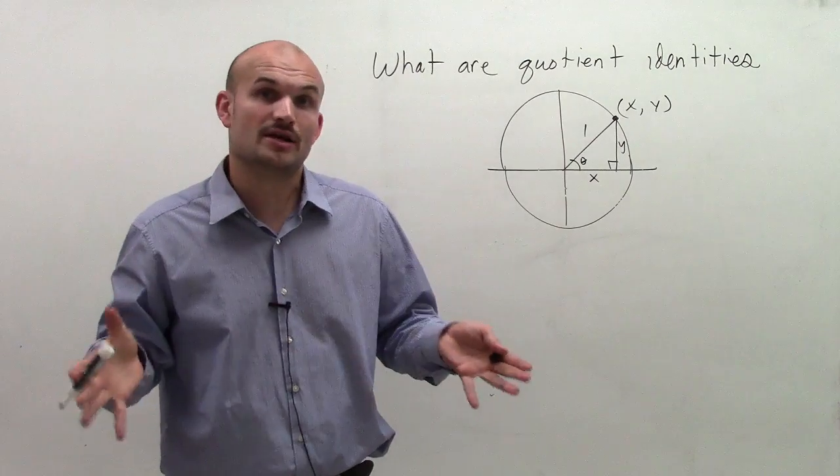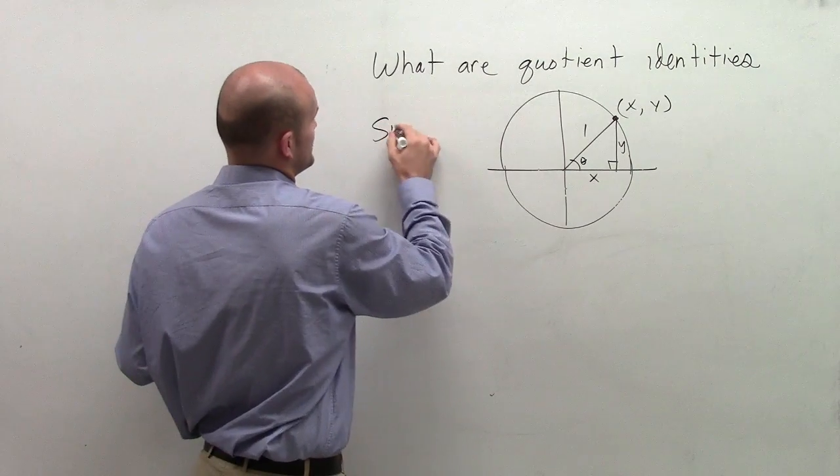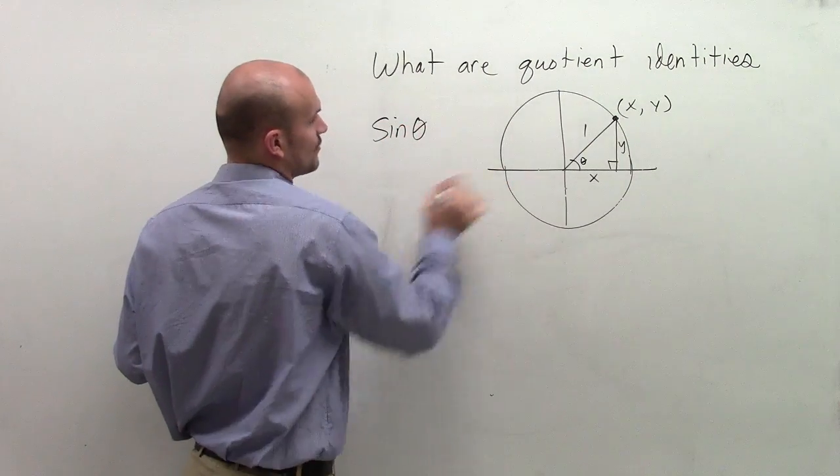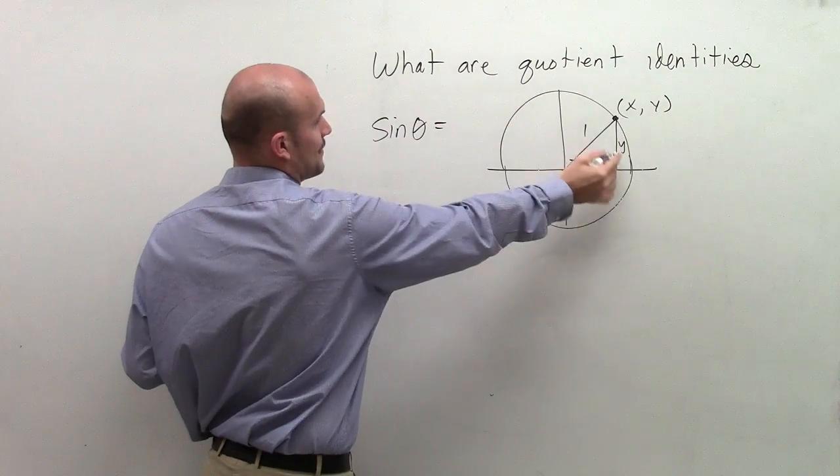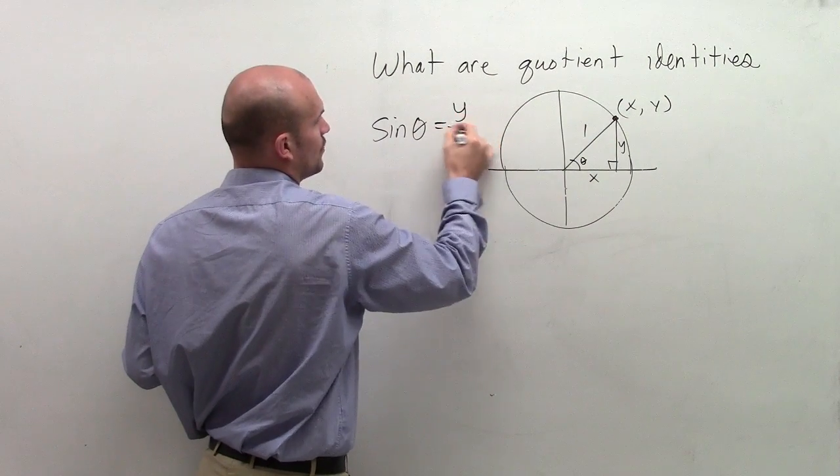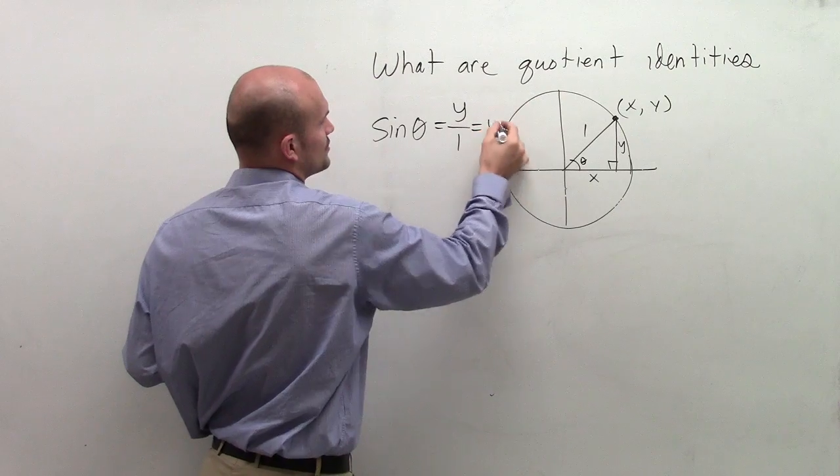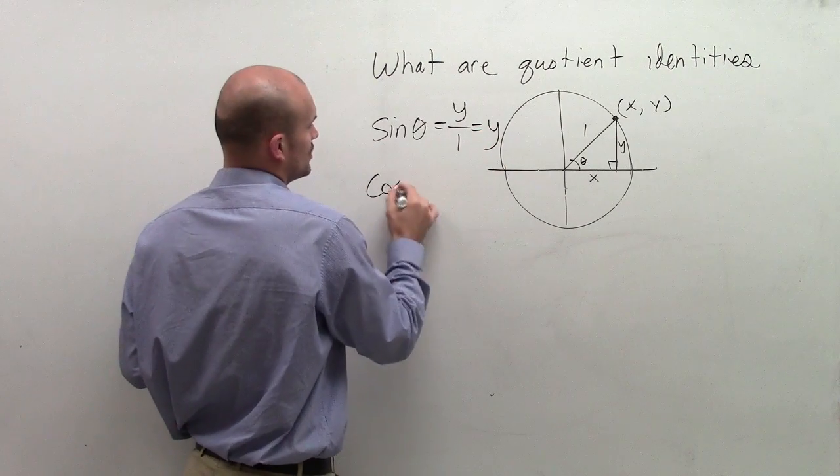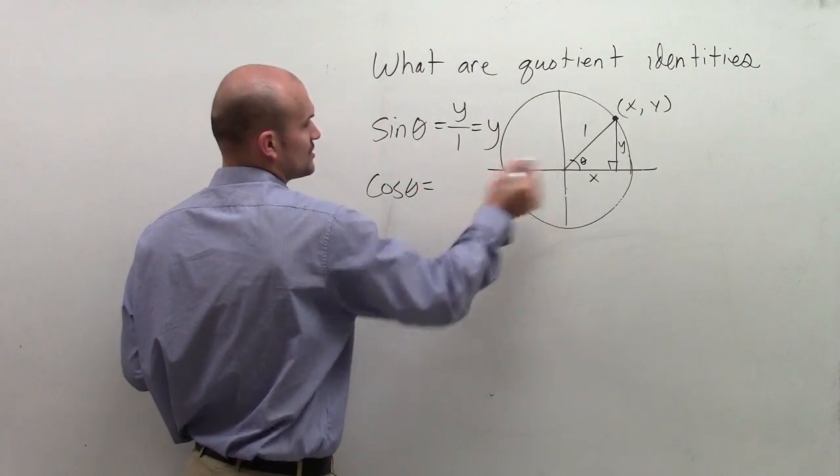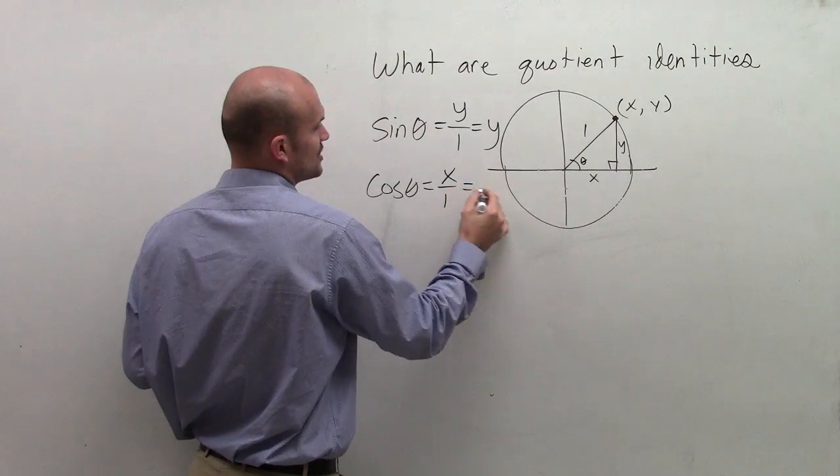Then we used the trigonometric functions. Remember that sine of angle theta equals opposite over hypotenuse, which was y over 1, which equals y. Then cosine of theta equals x over 1, which equals x.